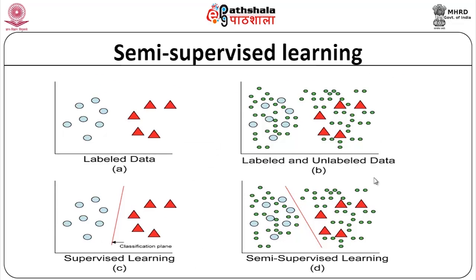Let us take an example. Here you have labeled data — blue is one label and red is another. The job of supervised learning is to find a boundary between the labels, separating the two data sets. In semi-supervised learning, you have labeled and unlabeled data. The amount of labeled data is less, and you have more unlabeled data. You try to fit a model that divides the two, but the division is completely different because of the unlabeled data — which does contribute, even though you might have thought it would not.